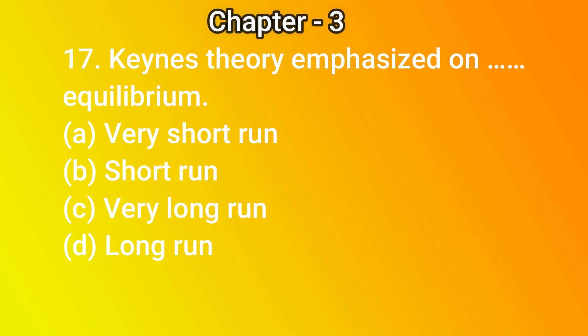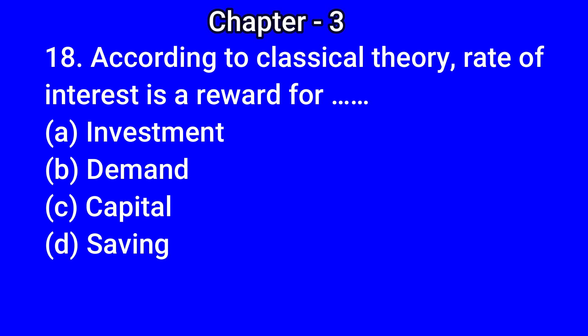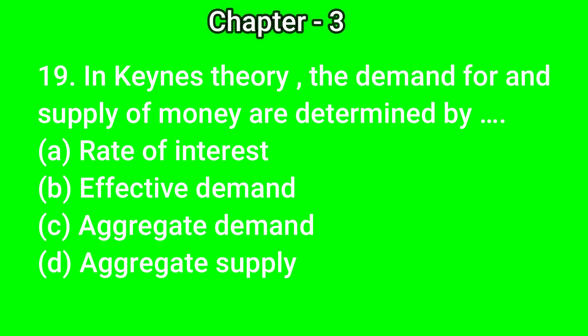Question number 19: in Keynes's theory, demand for and supply of money are determined by — (a) rate of interest, (b) effective demand, (c) aggregate demand, (d) aggregate supply. The correct answer is (a) rate of interest. Question number 20: Say's law stresses...